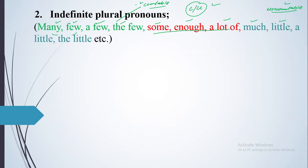They are divided into two parts — countable and uncountable — and red is in between, used with both. Now for their meanings: 'many' means you do not know the exact number. 'Few' means around 30 percent. 'A few' means 15 to 20 percent. 'The few' also means around 15 percent, but it implies we need more. 'Some' means around 50 percent.